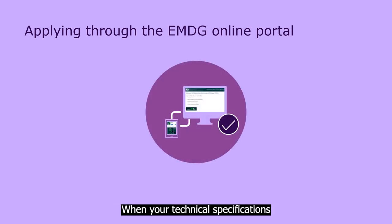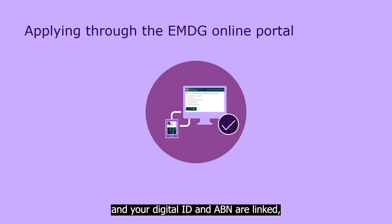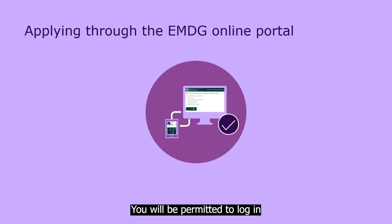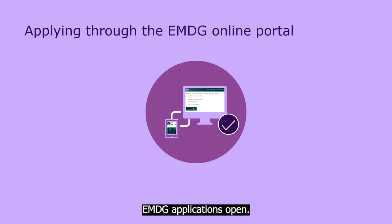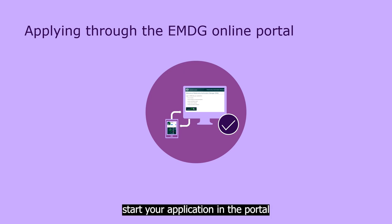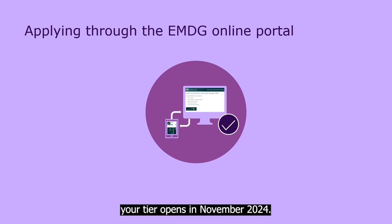When your technical specifications meet our requirements and your Digital ID and ABN are linked, you can log in to the EMDG Online Portal. You will be permitted to log in to the portal before EMDG applications open, but keep in mind you can't start your application in the portal until the moment your tier opens in November 2024.